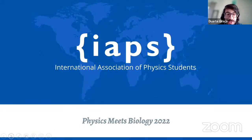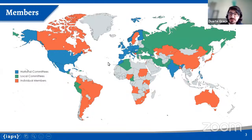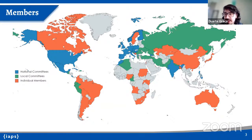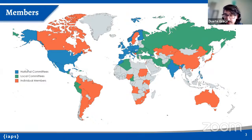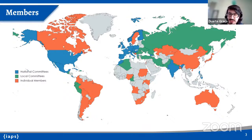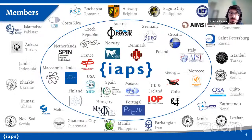Regarding IAPS, it is very much spread around the world. It is an international association that basically gathers students of physics and related areas. At the moment it is essentially spread throughout all continents, founded officially in 1987, and it has been growing in membership over the years, allowing for an amazing collaborative environment between participating students.